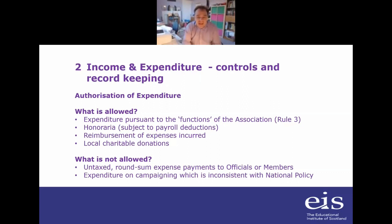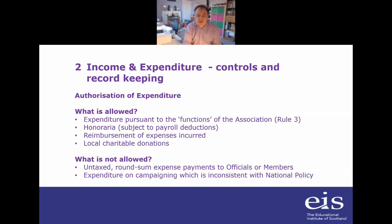Expenditure on campaigning which is inconsistent with national policy is another important one. This goes back to rule three, because rule three says that an association in its campaigning must be guided by national policy. So whilst it doesn't mean you can't campaign on local issues where there isn't a national policy, EIS local associations do not have the power to campaign in contradiction to national policy.